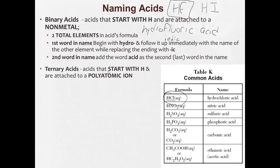Ternary acids are acids that start with H and are attached to a polyatomic ion. Kind of like right here, HNO3. If you look on table E, NO3 is nitrate. And here there's three total elements in the compound formula. Don't forget to use table E.